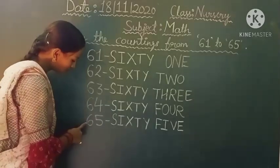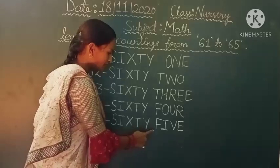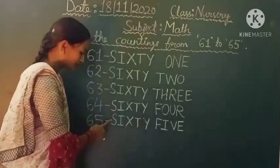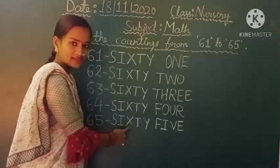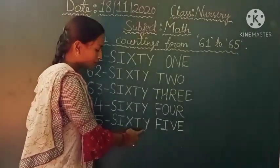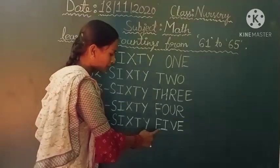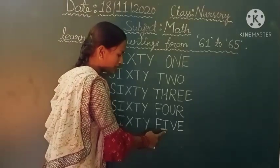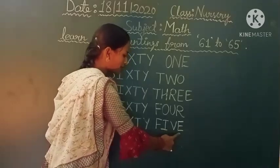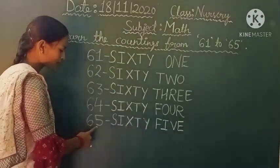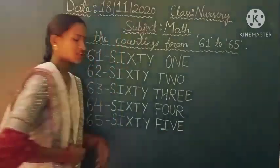Next is 65. 65. S-I-X-T-Y. 60. F-I-V-E. 5. 65. 65. Okay students.